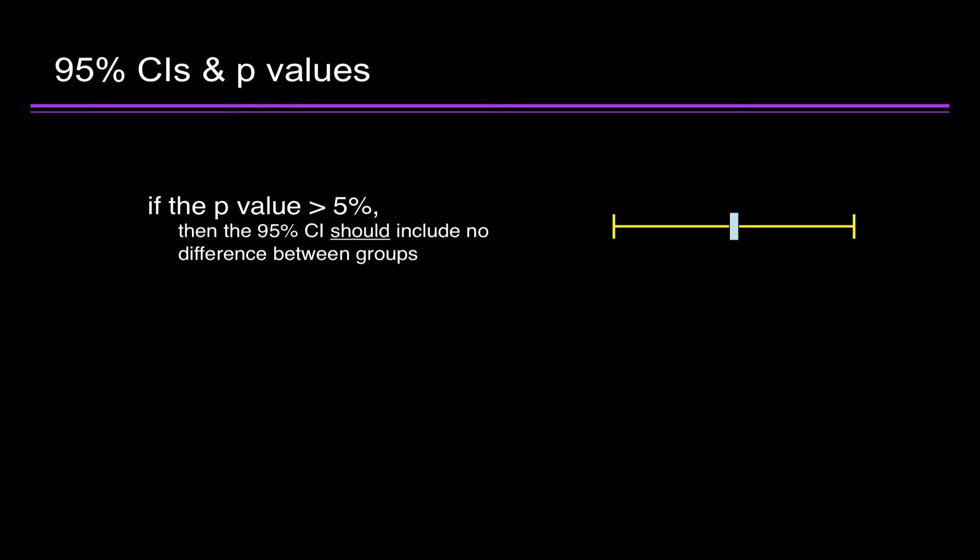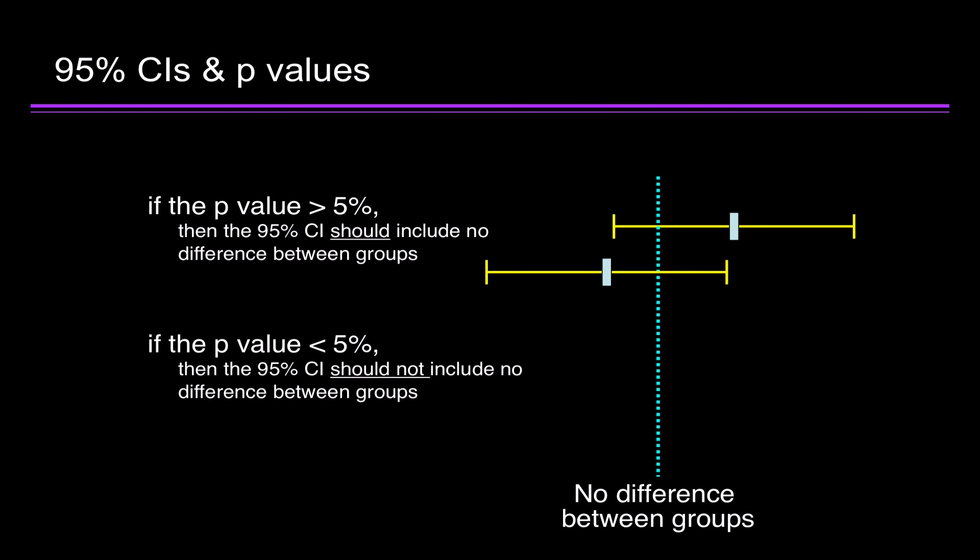So, here's a confidence interval. Here's no difference between the two groups. That study is going to have a p-value greater than 5%. And it could look like this again. The effect size is on the other side, but the confidence interval includes no difference. The p-value will be greater than 5%.